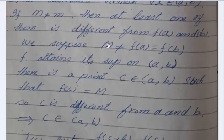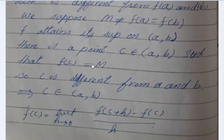When we suppose M is not equal to these two, then f attains its supremum on open interval (a,b). There is a point c belonging to (a,b) such that f(c) = M.